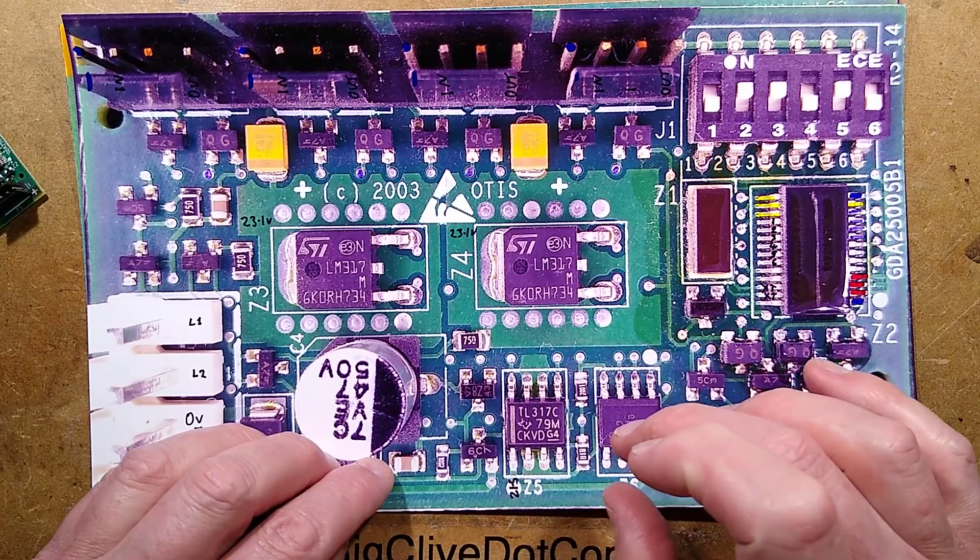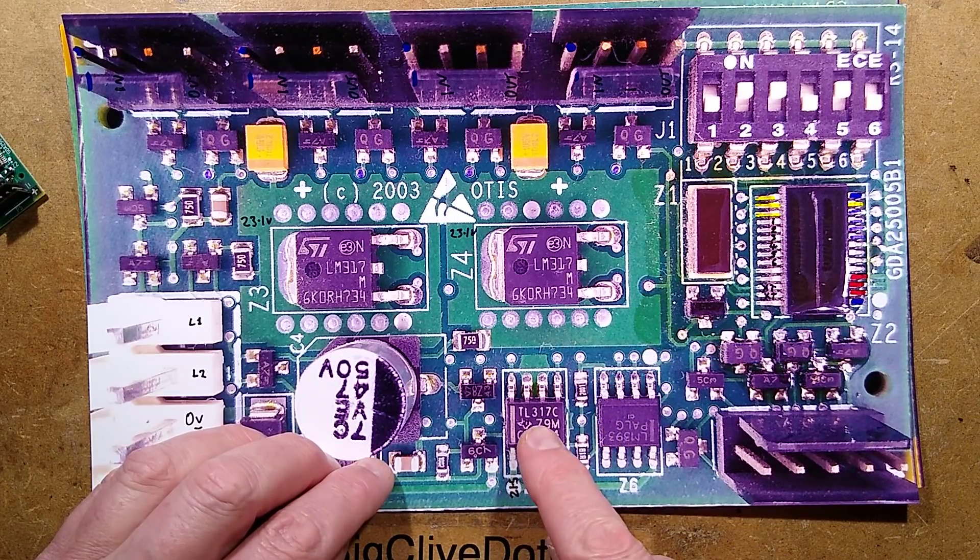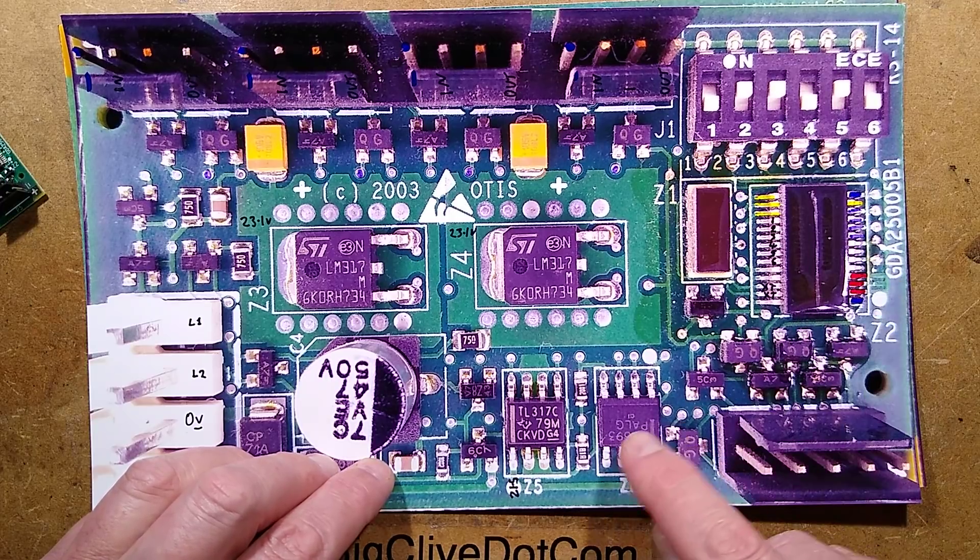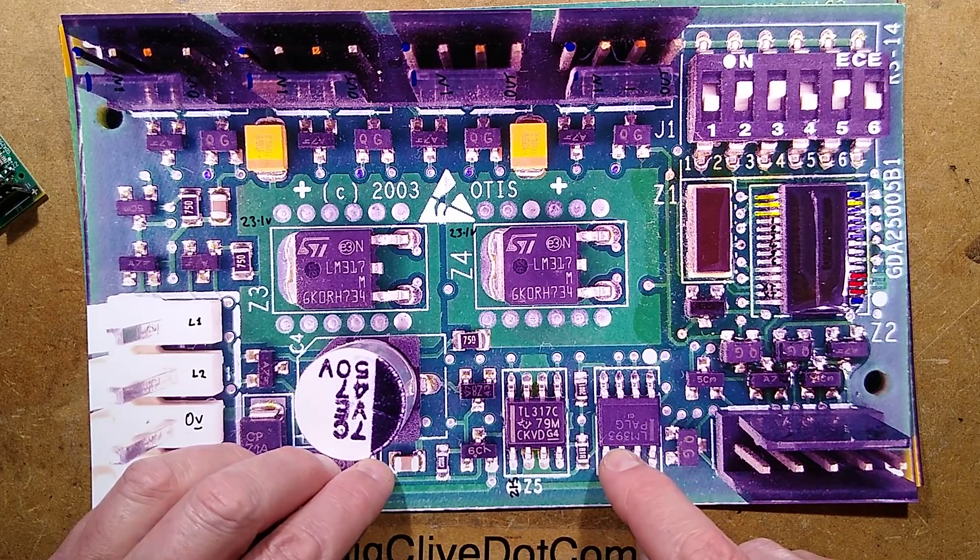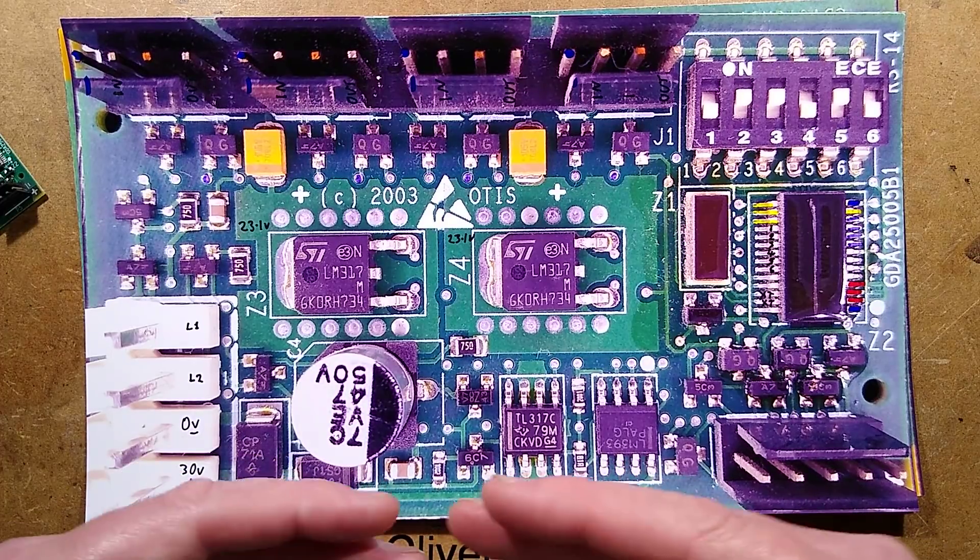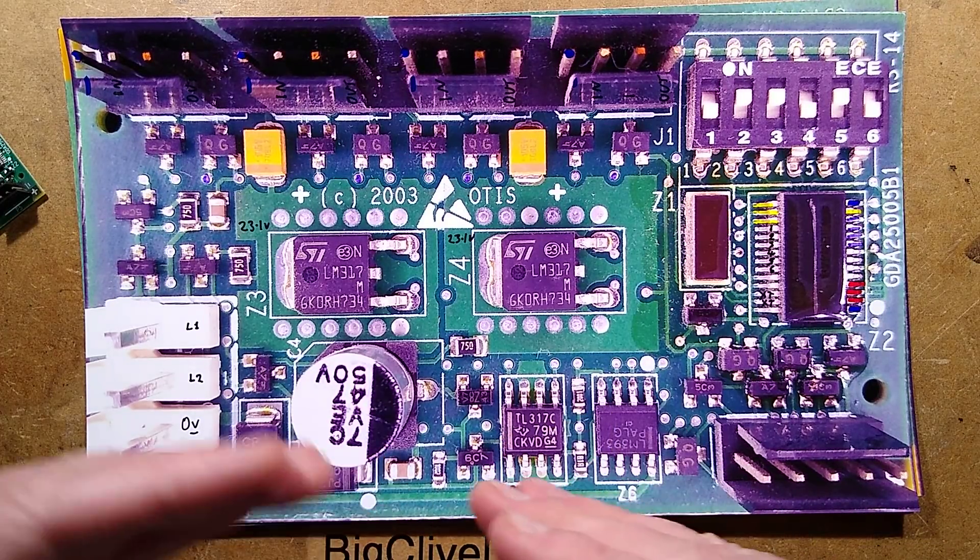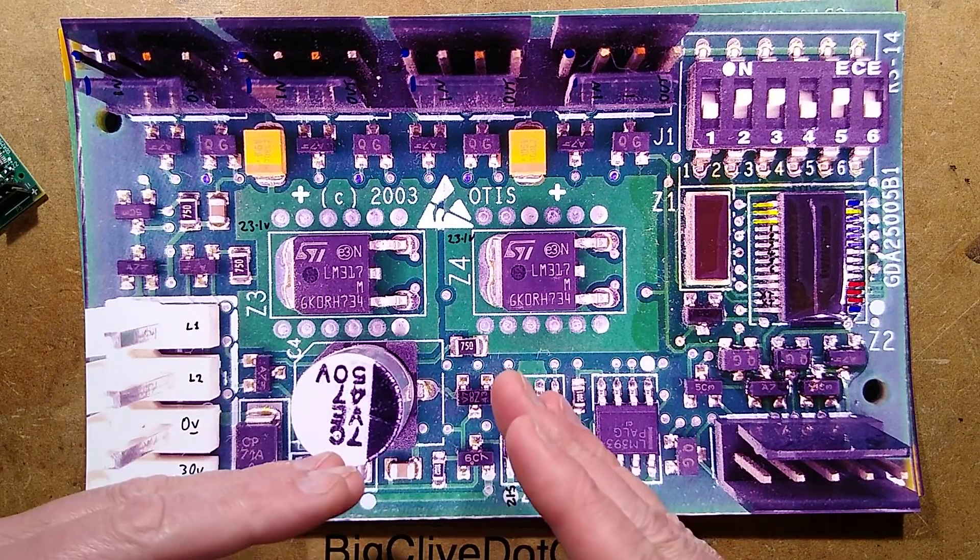The only other chip besides the microcontroller is an LM393, which is a comparator. It's like an op-amp but designed for decisive voltage comparisons and sudden logic transitions.